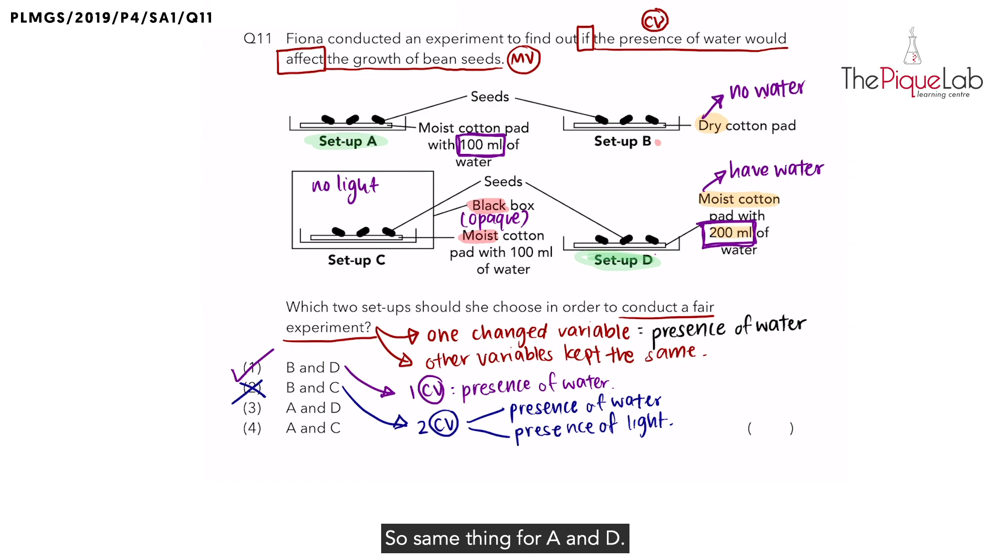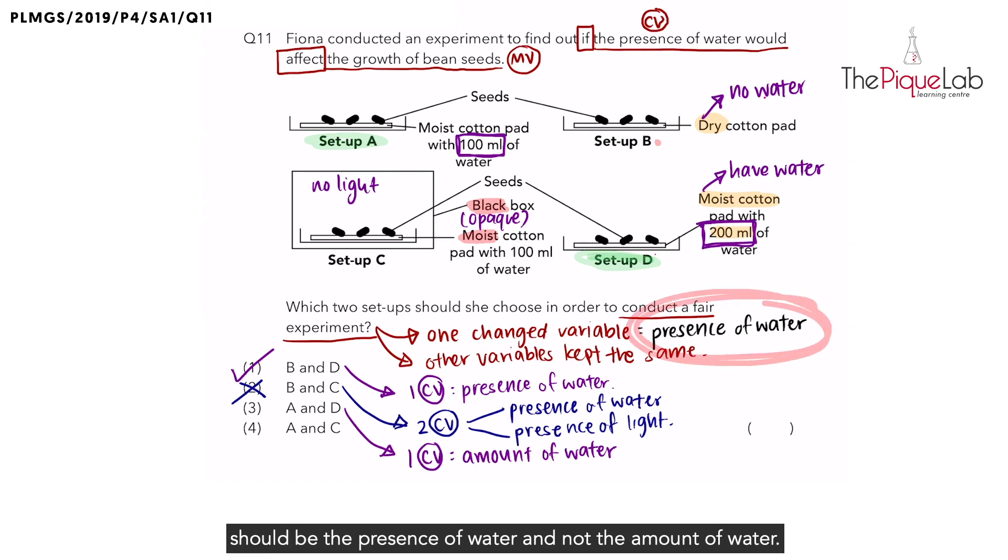They both have water, but the amount of water is different. So same thing for A and D, there is one change variable. But the change variable is not the presence of water. They both have water presence. What is the change variable? The change variable is actually the amount of water given. And that is not correct because over here, I've already indicated that my change variable should be the presence of water and not the amount of water. So number three is out.